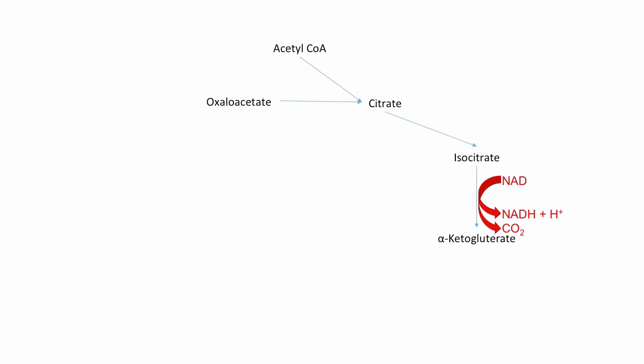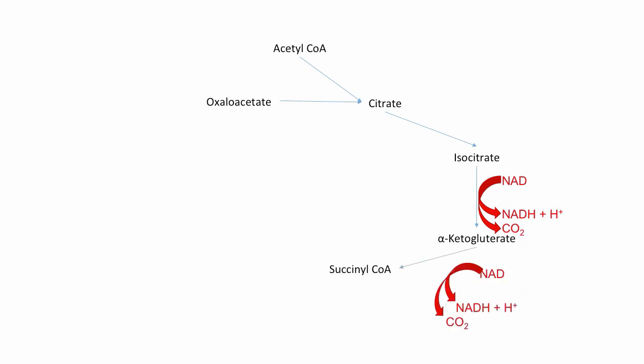The step after that is the transformation of isocitrate to alpha-ketoglutarate. This process shows the conversion of NAD into NADH and H+. Notice that there is a byproduct of carbon dioxide, which is only within our diagram to denote that this step requires oxygen to be carried out.